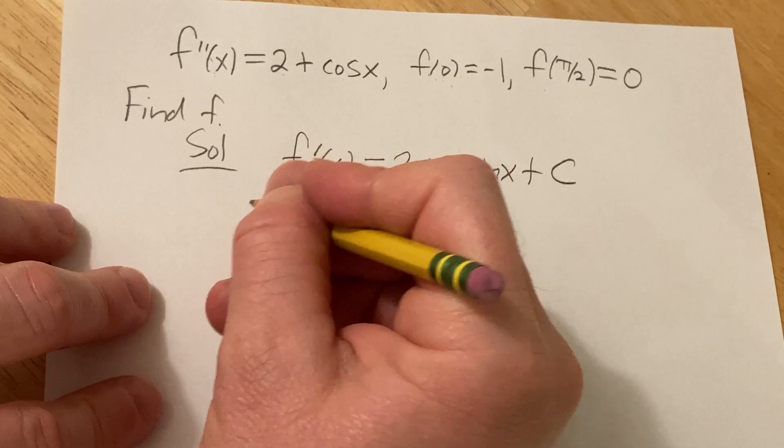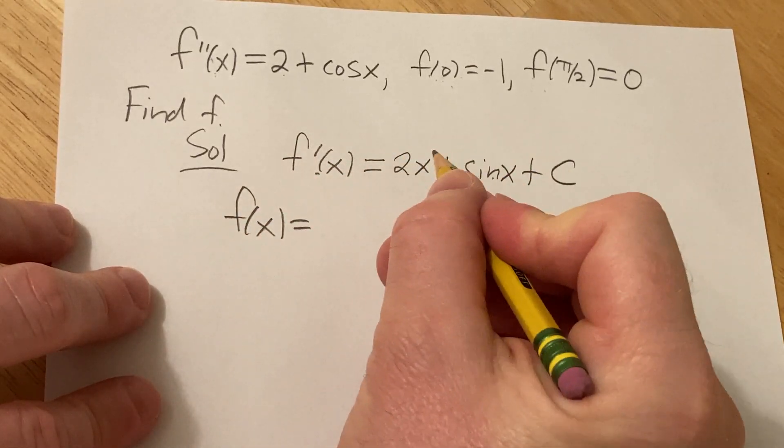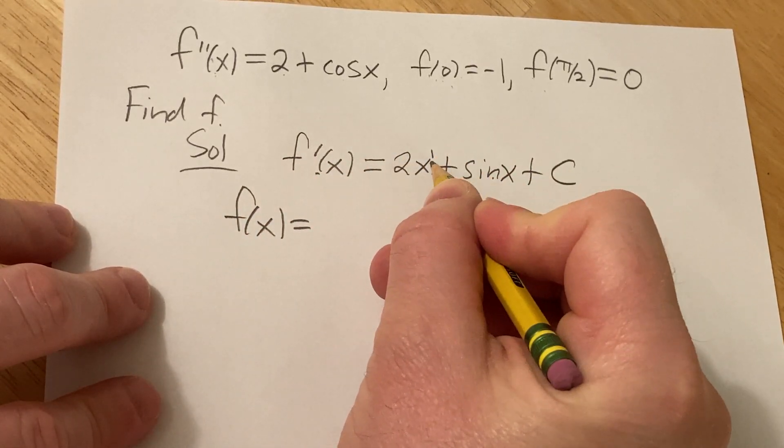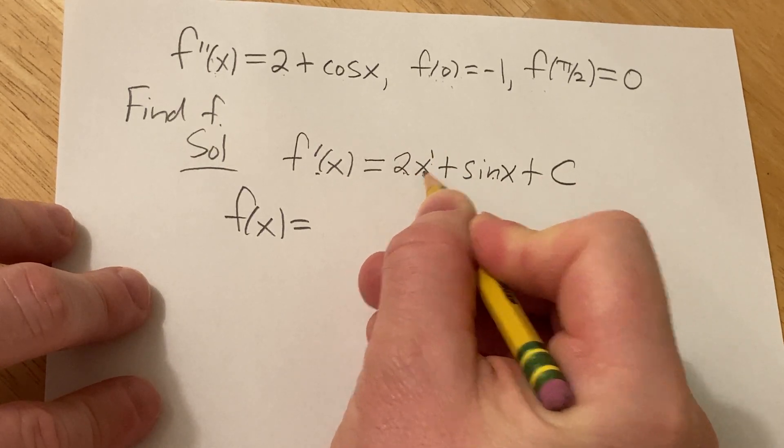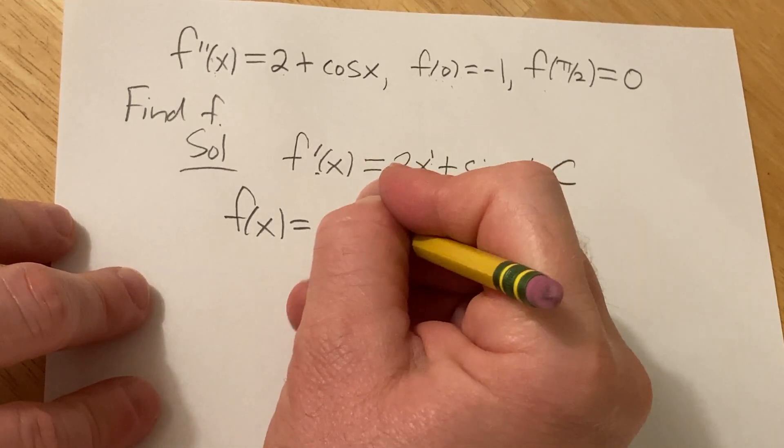So, integrating f prime, we get f of x. For this one, we can use the power rule. There's a 1 here. So, you'll get 2x squared over 2. So, the 2s will cancel. So, we'll just get x squared.